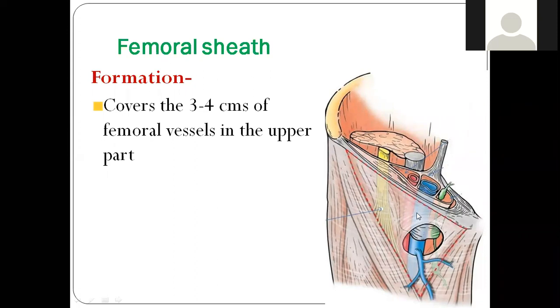As you see in head and neck, we have the carotid sheath. In the lower limb, we have the femoral sheath. So it is covering 3 to 4 centimeters of the femoral vessels in the upper part.